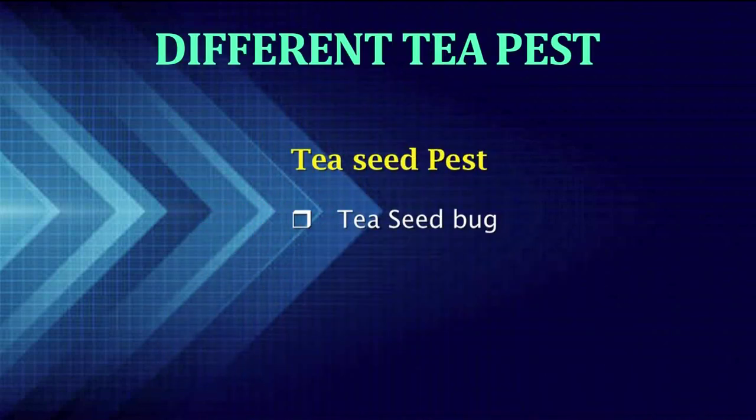So, these are the tea stem and branch pests. Now, come to the tea seed pests. Among the tea seed pests, the tea seed bug is one of the common pests. This bug sucks the sap of the seed cotyledon, and as a result a white tea spot develops. Thus, the infested seeds do not attain maturity and ultimately fall down from the tree.